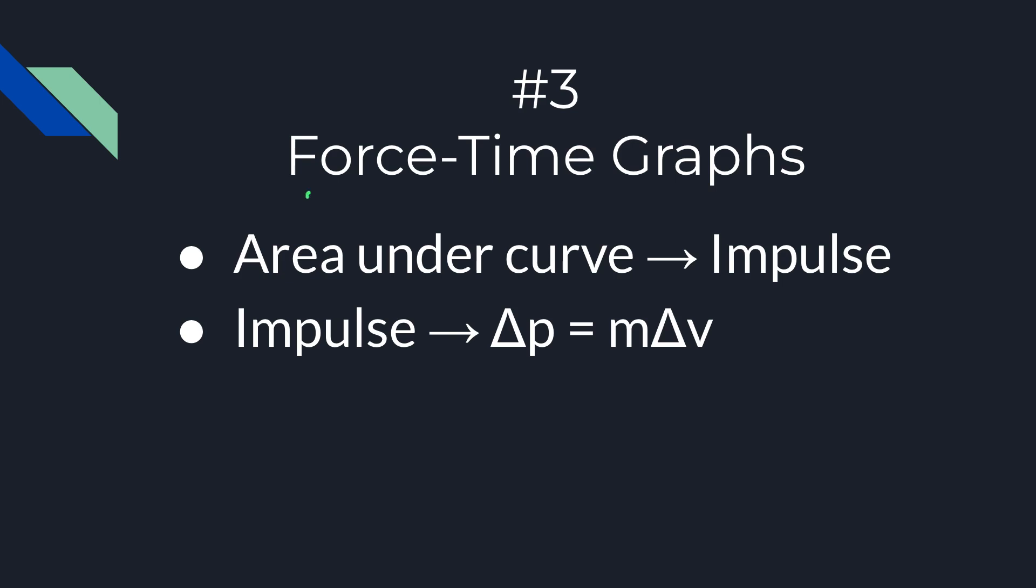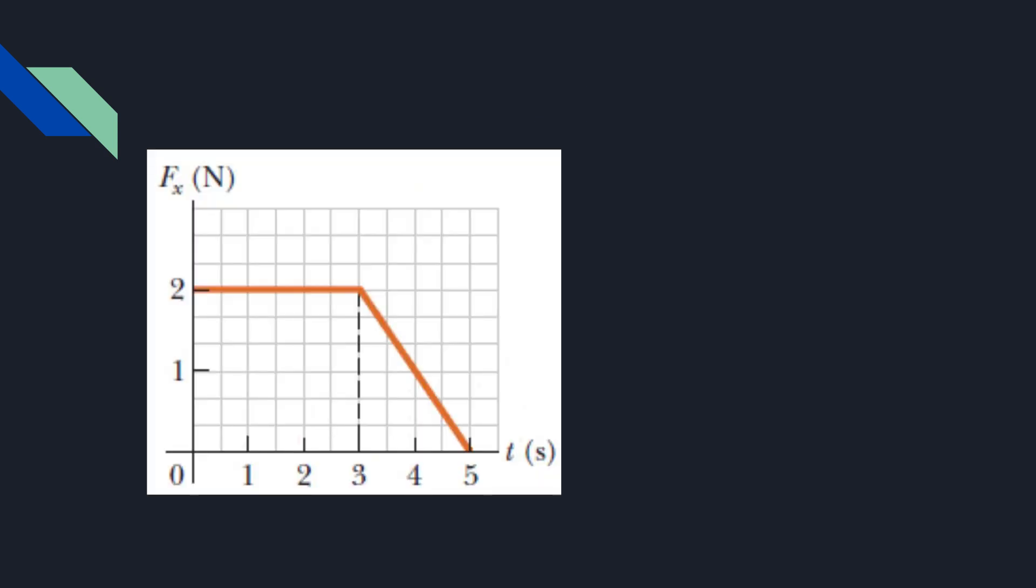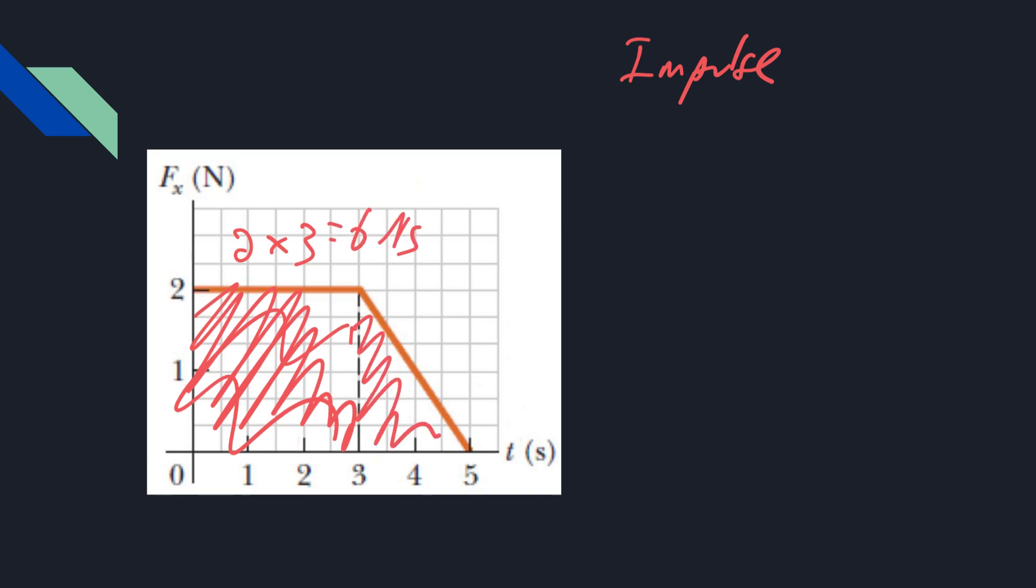Question number three is force-time graphs. The key thing to remember with these is that the area under this curve is going to be our impulse, and then impulse is equal to our change in momentum, which would be mass times change in velocity. So let's do an example of this. Let's say we have a graph that looks like this, and we want to find the impulse of this graph. You would just find the area underneath. So for example, the area of this would be 2 times 3, or 6 newton-seconds, and the area of this would be 1 half, 2 times 2, or 2 newton-seconds. So the total impulse in this case would be 8 newton-seconds.